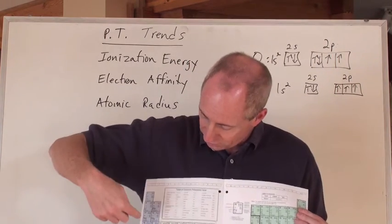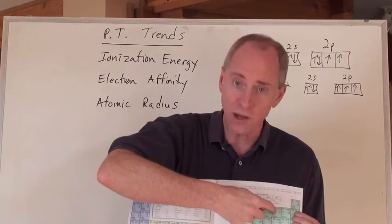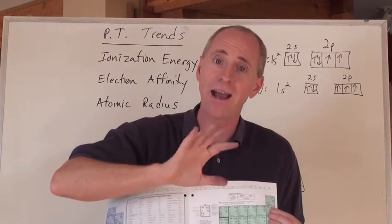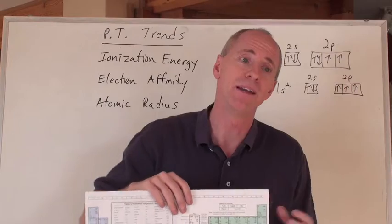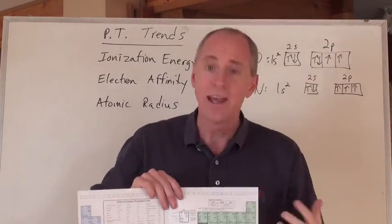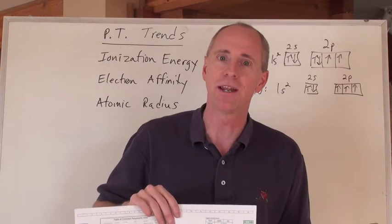So ionization energy is an increase going across, but oxygen says, you know what? I actually would like to get rid of my outermost electron a little bit easier than, say, phosphorus would. And so there's a bucking of the trend.